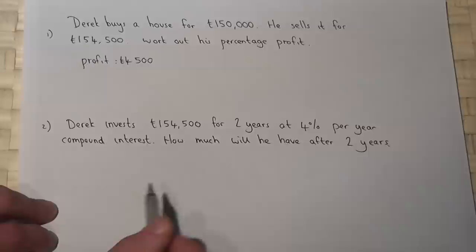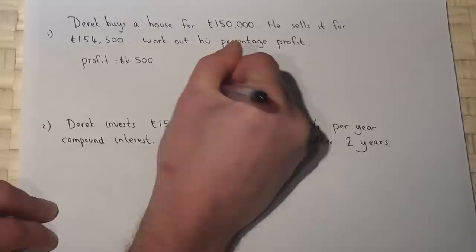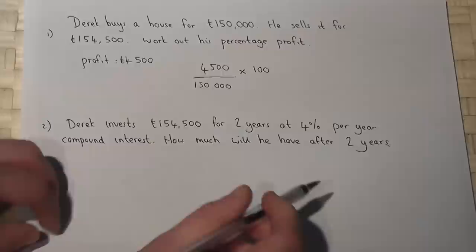Now to find this percentage profit, we then just find this as a percentage of the original amount. So if I do £4,500 out of £150,000, and then just times that by 100, that will give me his percentage profit.